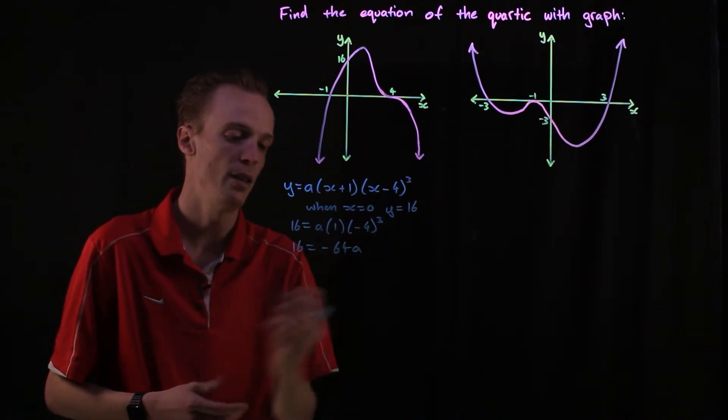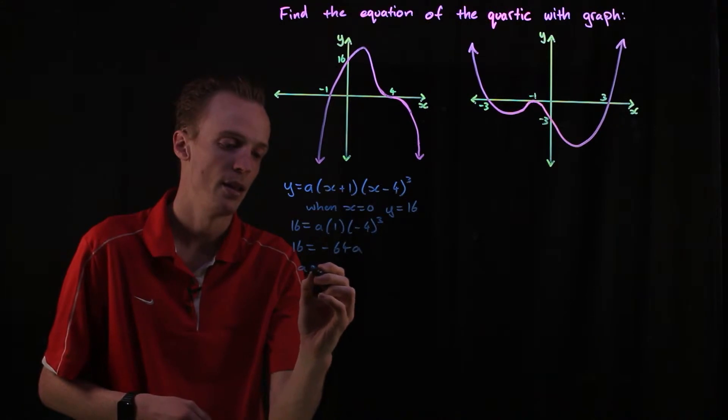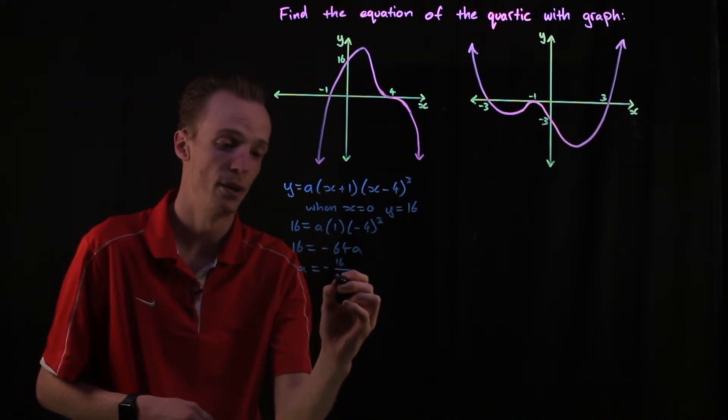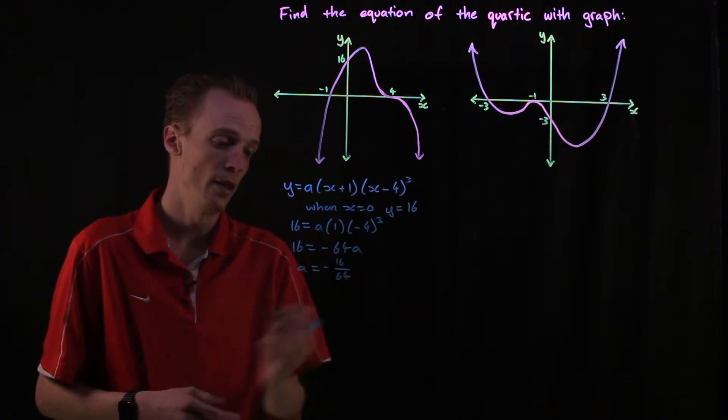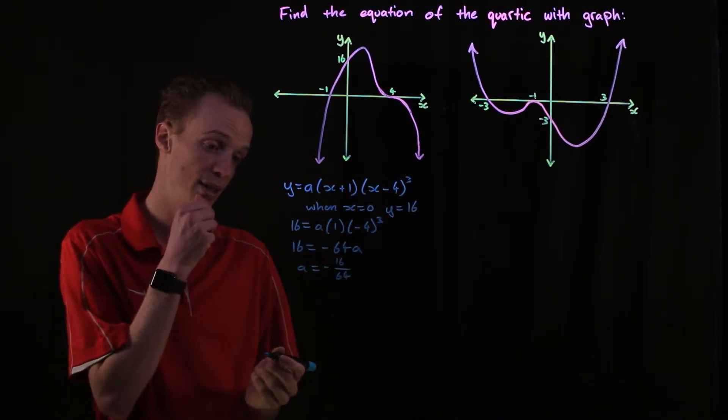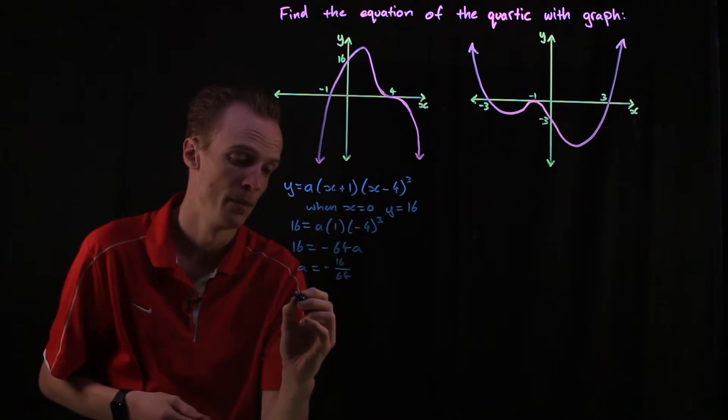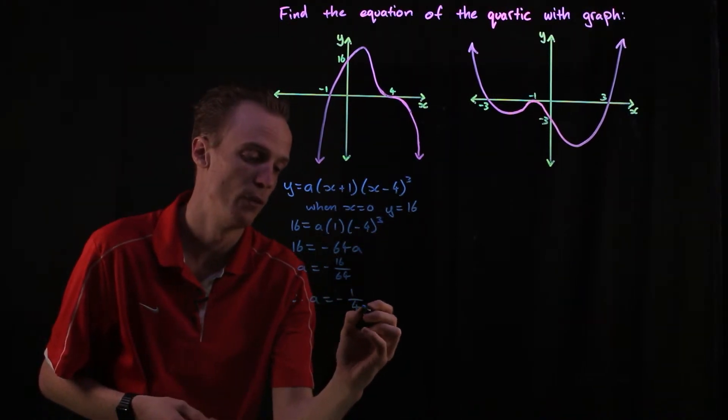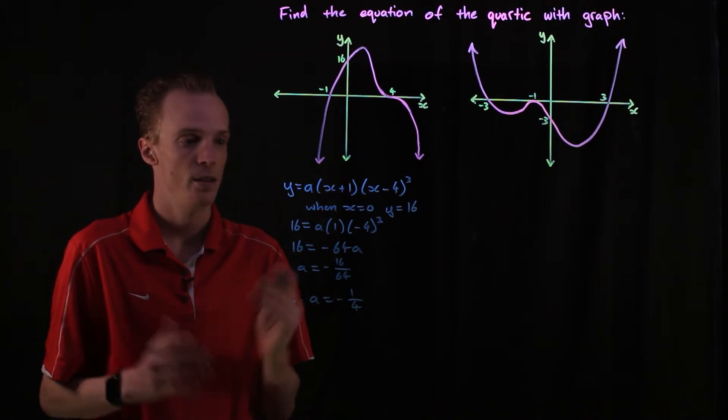When I expand that out, negative four cubed is negative 64, so it'll be negative 64a here. My a is going to be negative 16 over 64, which means that 16 divides into them both, so therefore my a is going to be equal to negative one over four.